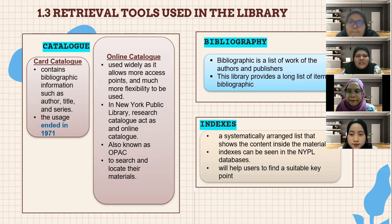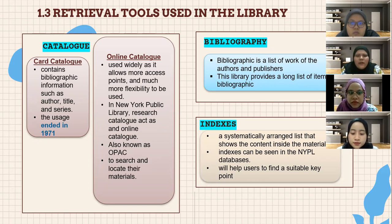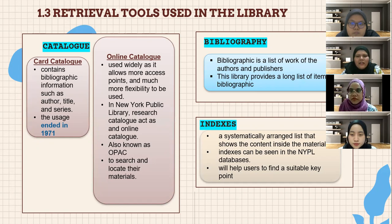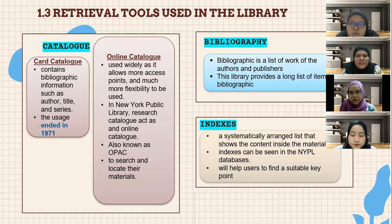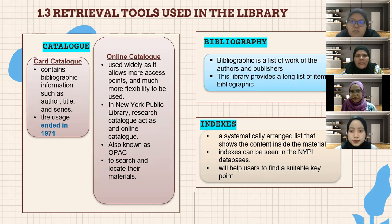In the New York Public Library, the research catalog acts as an online catalog, also known as OPAC. It is used to search and locate materials. Next is bibliography: a bibliography is a list of works by an author and publisher; this library provides a long list of bibliographic items. Lastly, indexes: an index is a systematically arranged list that shows the content inside materials. Indexes can be seen in the New York Public Library databases and help users find suitable keywords for their searches.